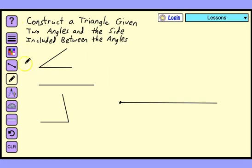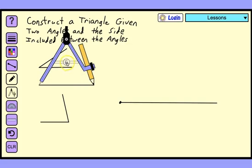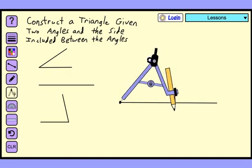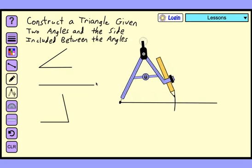To find the second vertex, set your compass to match the length of the line segment, the given line segment. We'll lock the compass. Set one side of the compass at our first vertex and make an arc. That shows us where the second vertex must be.